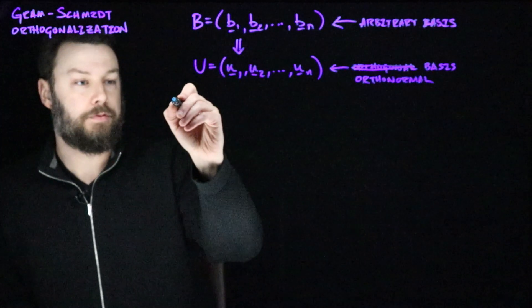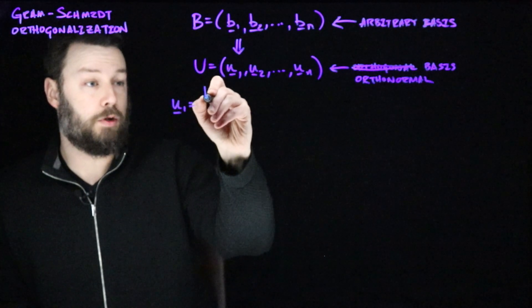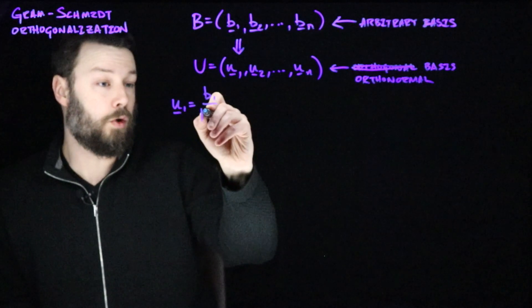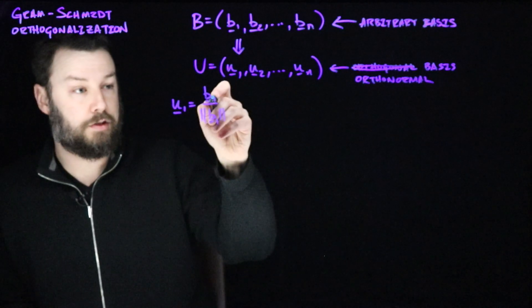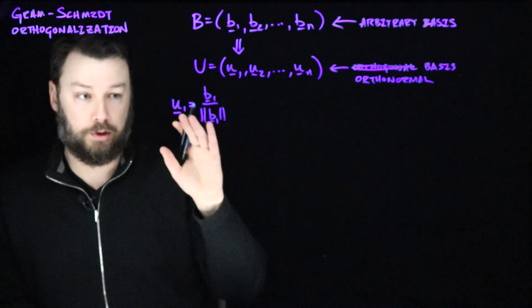So step one is to say that u1 is equal to b1 divided by the norm of b1. This has the effect that we just turned b1 into something of unit length. And so that's our starting point with u1.